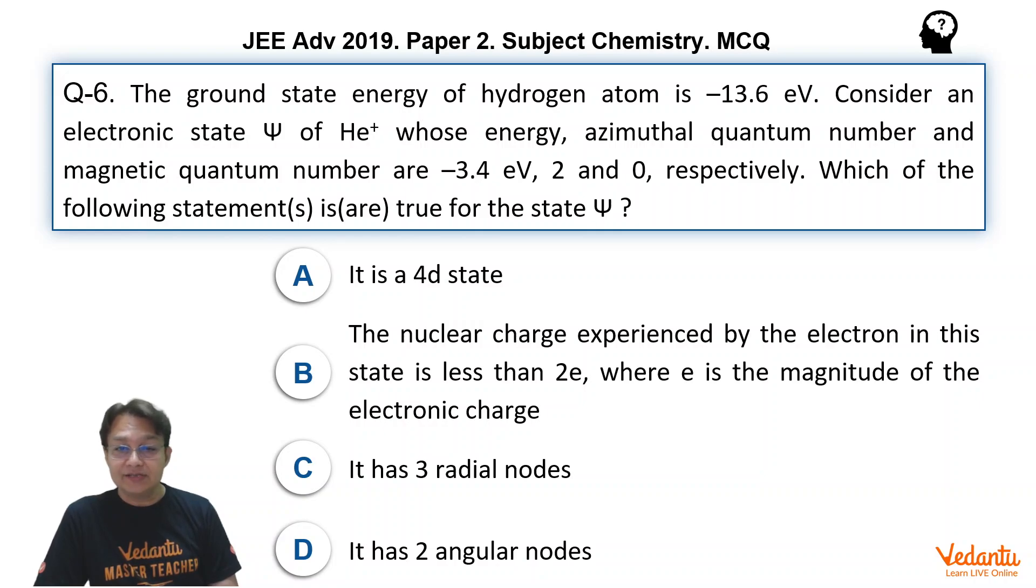It is a 4D state. The nuclear charge experienced by the electron in this state is less than 2e, where e is the magnitude of the electronic charge. It has 3 radial nodes and it has 2 angular nodes.